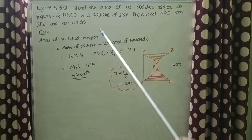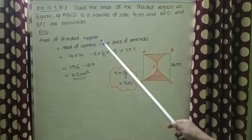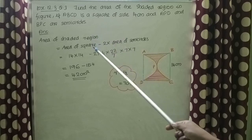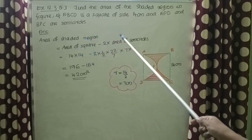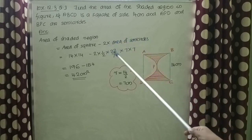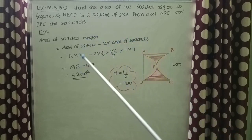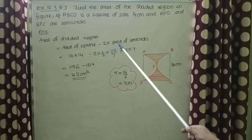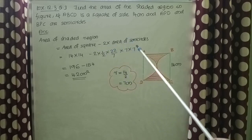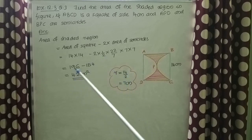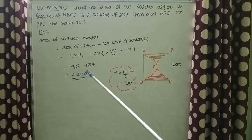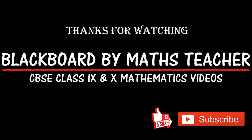Area of shaded region equals area of square minus 2 into area of semicircle. Area of square is side into side; area of semicircle is half pi r square. So that is equal to 14 into 14 minus 2 into 1 by 2 into 22 by 7 into 7 into 7, that is equal to 196 minus 154, that is equal to 42 cm square.